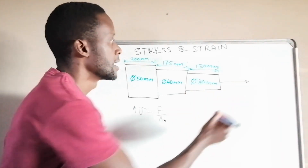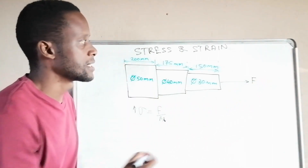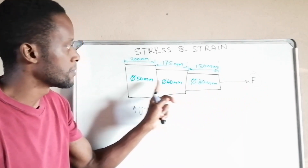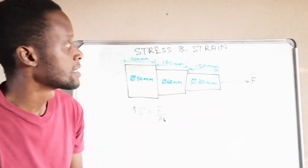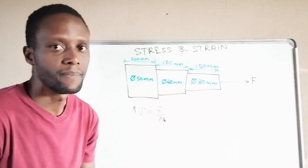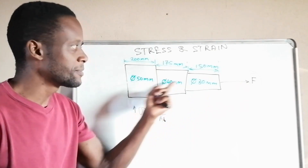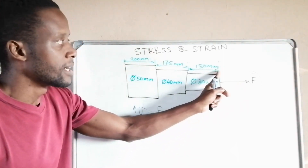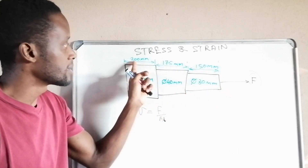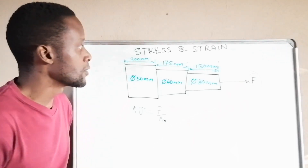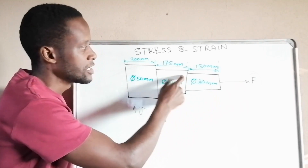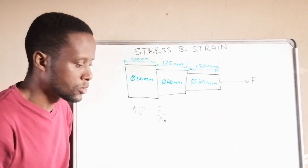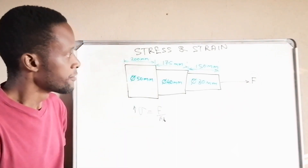The first thing we need to do is figure out how much force is acting on all the parts. The force remains the same throughout — the force acting on part A is the same as on part B and part C. However, the stress in each part will not be the same because their areas are different. Also, the extension will not be the same because they have different lengths: 150mm, 175mm, and 200mm. We find the extension in each part, then add them all up to get the total change in length.